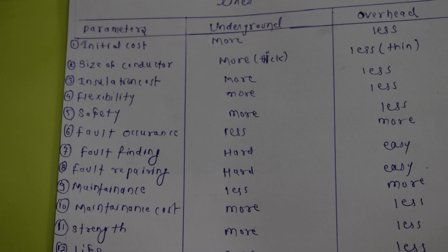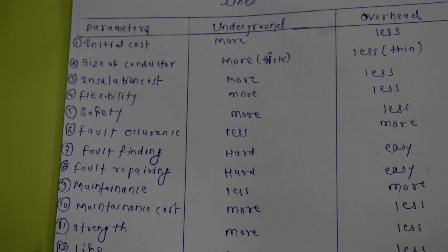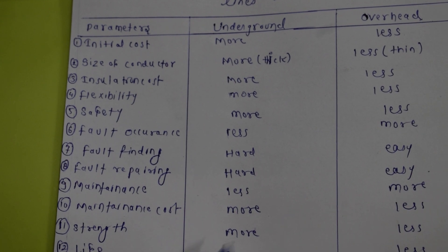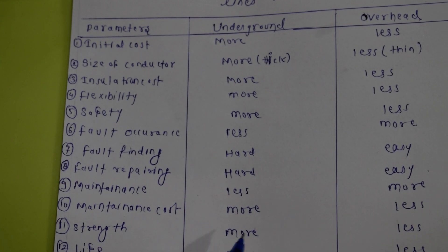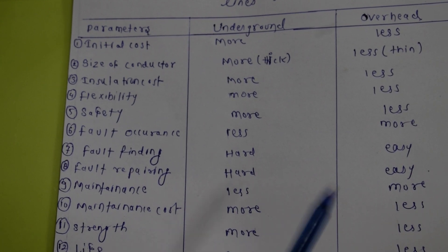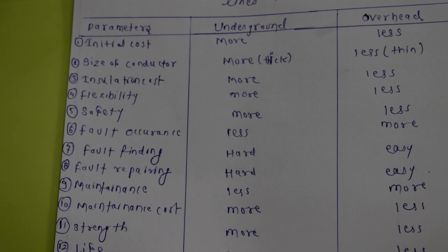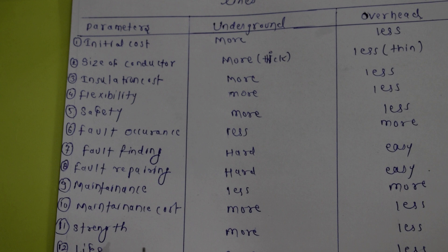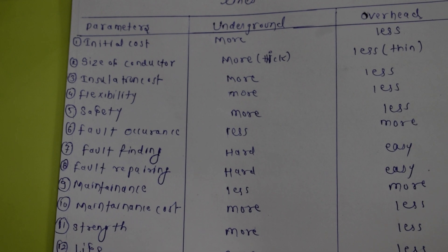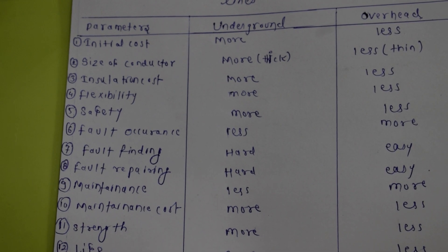The eleventh point is strength. The insulation strength of underground lines is less compared to overhead. Regarding life span, underground lines last longer because they are protected from external disturbances, while overhead lines have a shorter lifespan.